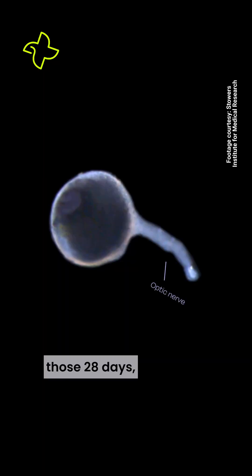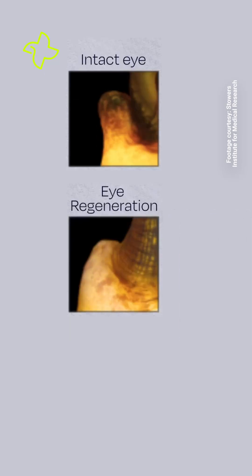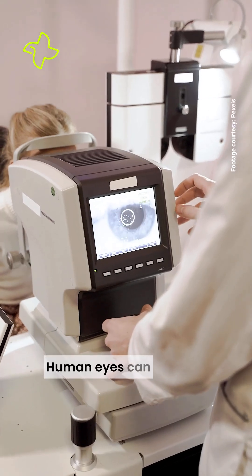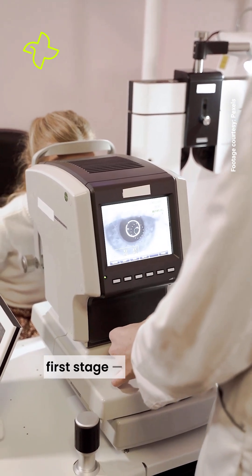And in those 28 days, researchers have identified four different stages. The first stage is wound healing, followed by the formation of a special cell mass. Then the lens and retina emerge. And in the final stage, all of the eye components mature. Human eyes can only do the first stage, wound healing.